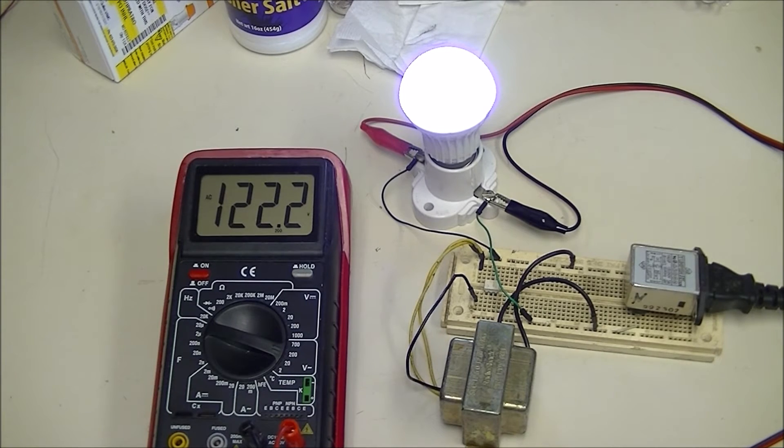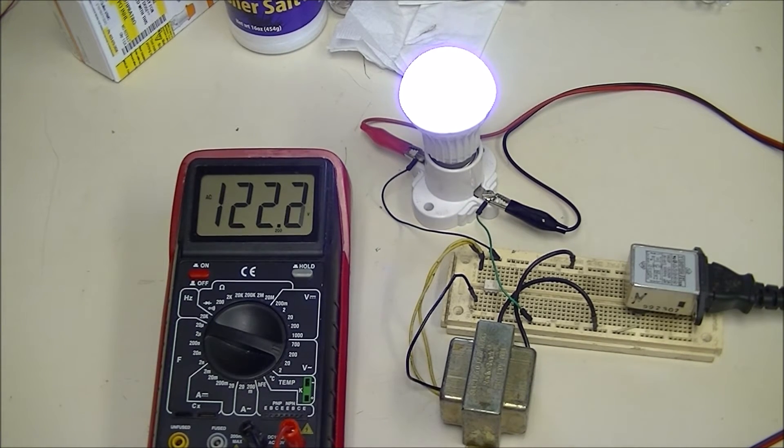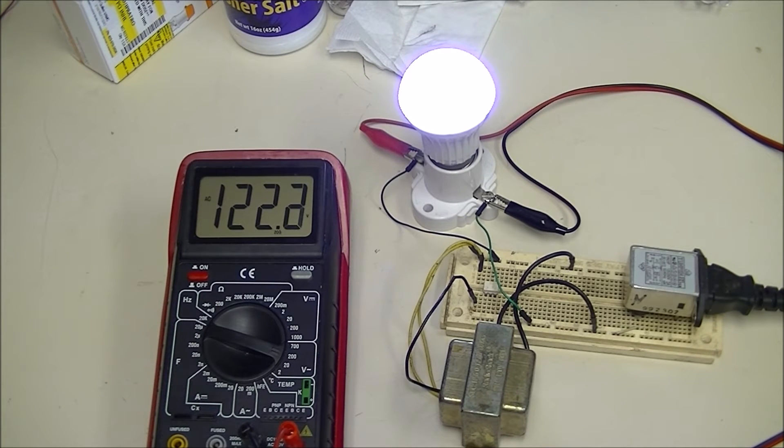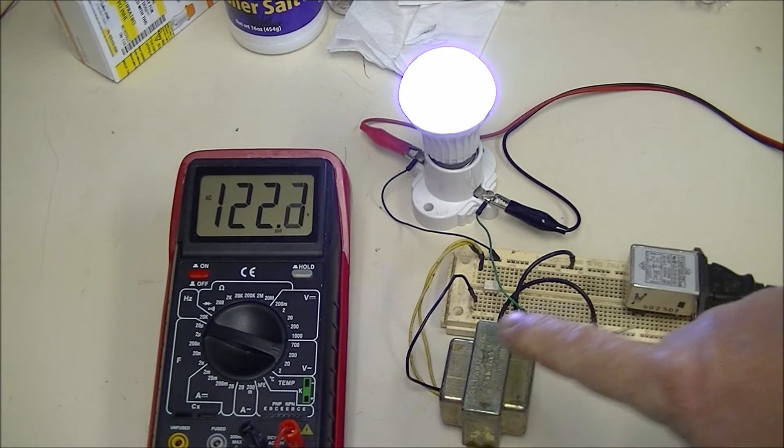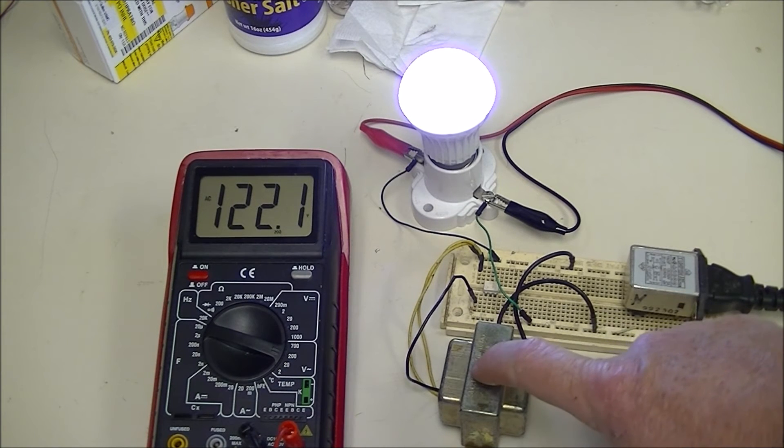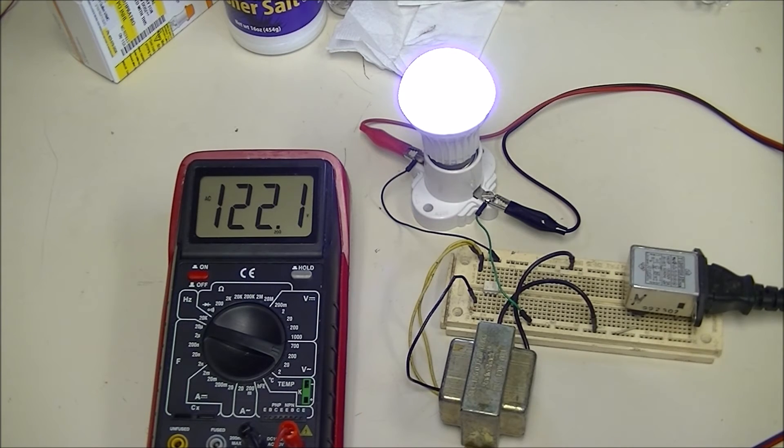We're going to demonstrate a buck-boost transformer connection. Right now this is a 24 volt center tap, actually 25 to 26 volt center tap transformer, 120 to 25 volt.